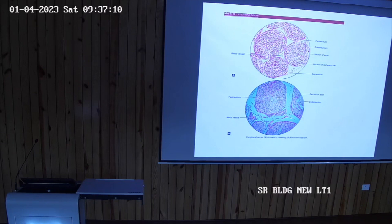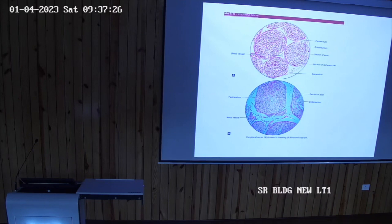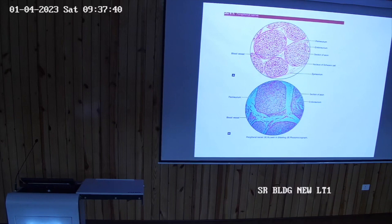When we see the slide of the peripheral nerve, you will find that the bundle of nerve fibers is surrounded by a connective tissue sheet. The complete nerve is surrounded by a connective tissue sheet called the epineurium. Each bundle or fascicle is surrounded by another connective tissue covering called perineurium.